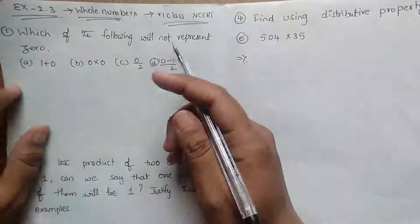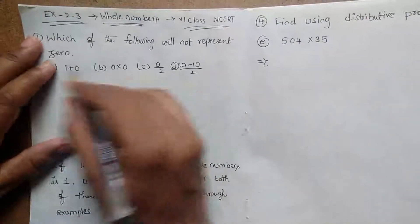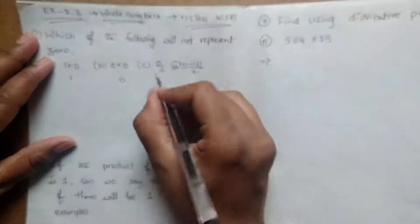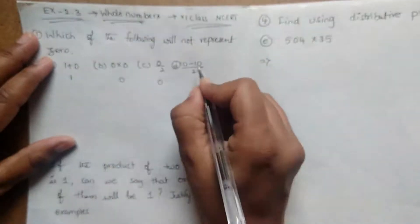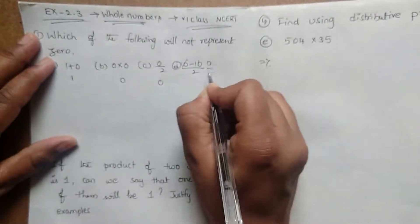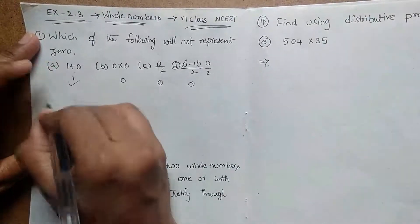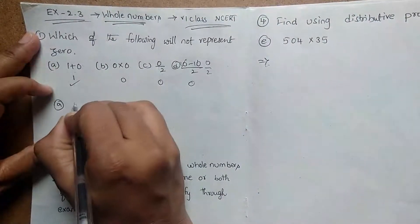See here: 1 plus 0 is 1, 0 into 0 is 0, 0 by 0, 10 by 0 also 0. Here 0 by 2 is also 0. So this is not represented, option A. 1 plus 0 will not represent zero.